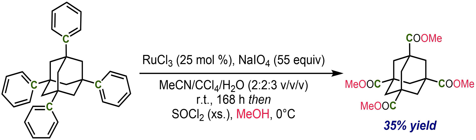Ruthenium tetroxide is the inorganic compound with the formula RuO₄. It is a colorless, diamagnetic liquid, but samples are typically black due to impurities. It is volatile. The analogous OsO₄ is more widely used and better known. One of the few solvents in which it forms stable solutions is carbon tetrachloride.